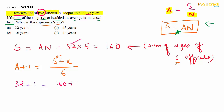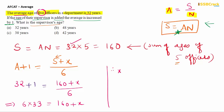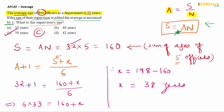Solving: 6 × 33 = 160 + X, so 198 = 160 + X, giving X = 198 − 160 = 38 years. So the supervisor's age is 38 years, and the answer is Option C.